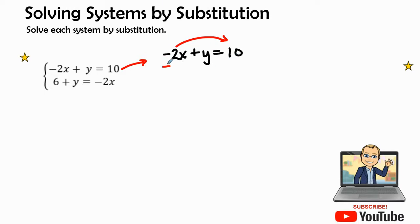So let's go ahead and add 2x to both sides. Negative 2x and positive 2x gives me zero. So I have y equals 2x plus 10. Now, this shows me that after I isolated the variable on the right-hand side, I have an expression of 2x plus 10 that I can plug into my second equation.